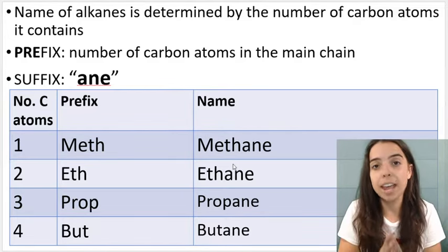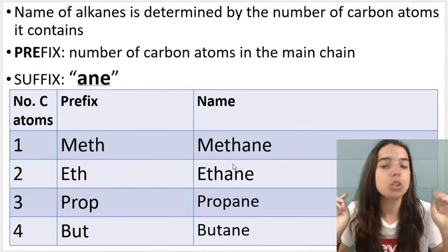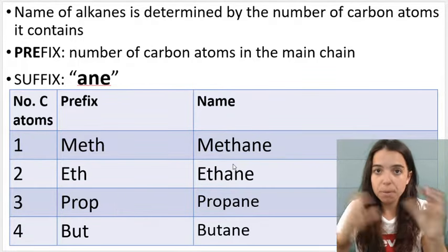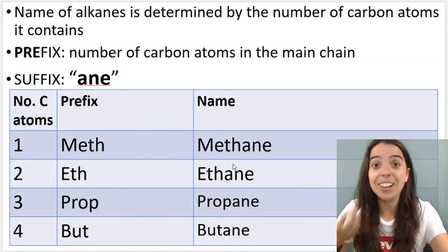But because we're talking about alkanes, our compounds are going to end in ane. So for example an alkane with three carbons will be propane. Prop meaning three. Ane meaning alkane.